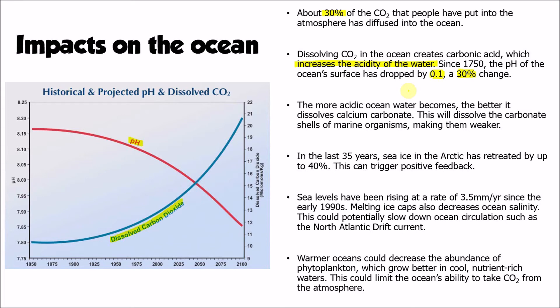When ocean water becomes more acidic it is better at dissolving alkaline minerals like calcium carbonate. Calcium carbonate is the main mineral from which marine organisms make their shells, and those shells can be made weaker as a result of the acidic seawater dissolving them — it's a chemical reaction.